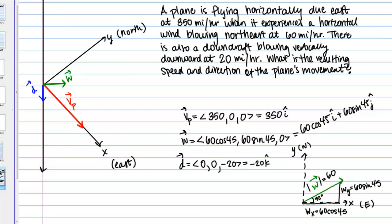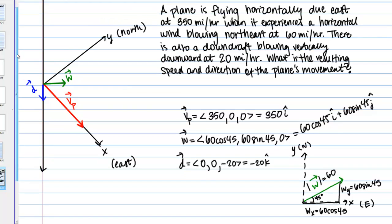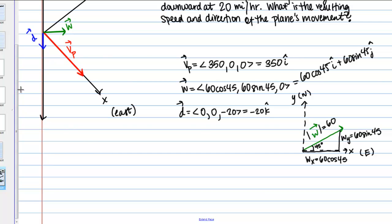Alright, so what's next? Our ultimate goal is to find the resulting vector of the plane's movement. So to do that we're going to simply add together these three vectors. So then I'm going to call the resultant movement just vector V. And it's going to be the sum of vector V sub P plus vector W plus vector D.